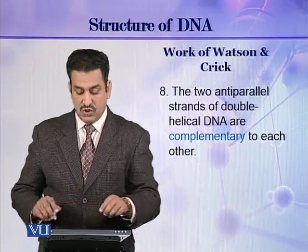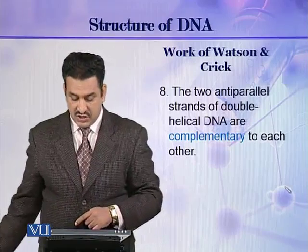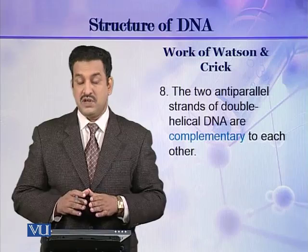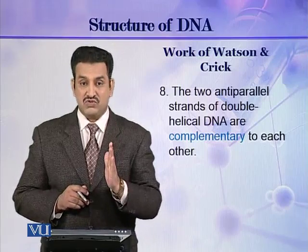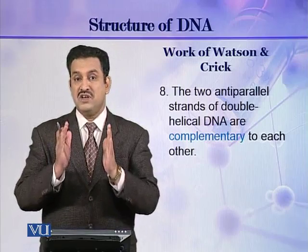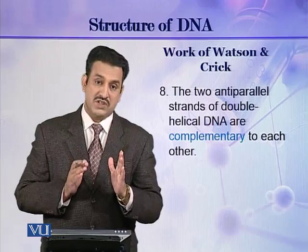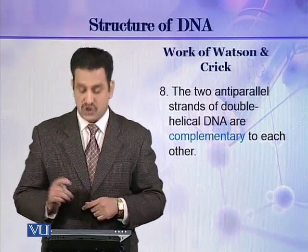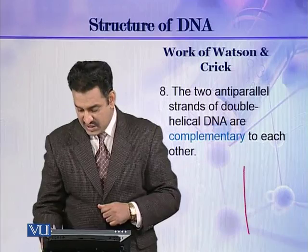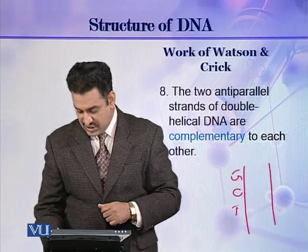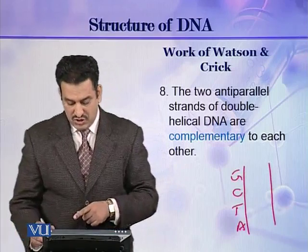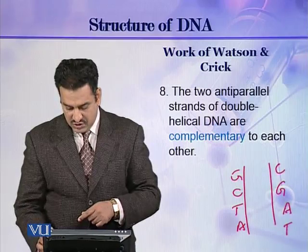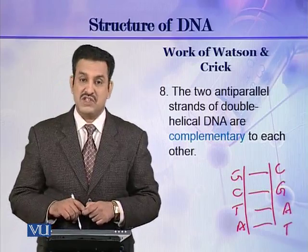Finally, they also described that the two anti-parallel strands are complementary to each other. This means if A is present in one strand, T will be present in the other strand, and if G is present in one strand, C will be present in the other strand. For example, a sequence G, C, T, A on one strand corresponds to C, G, A, T on the other strand. This is called complementary base pairing.